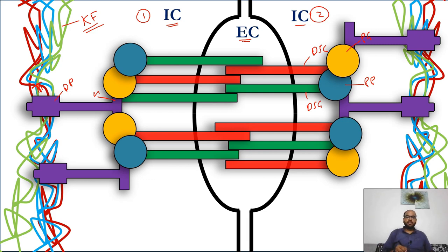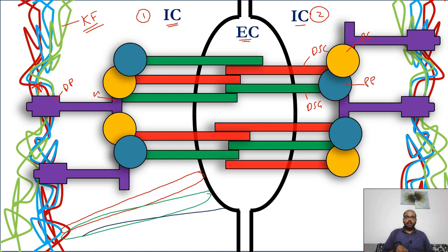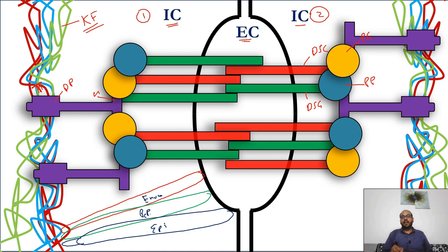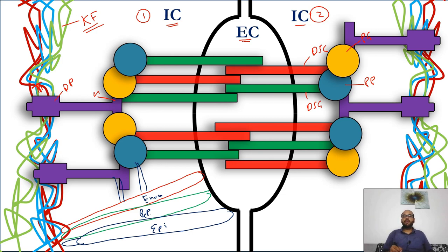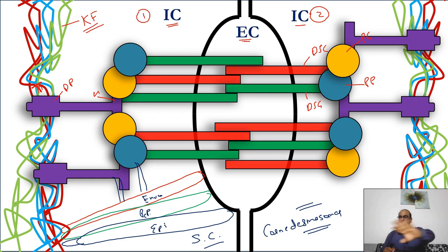Additional proteins — epiplakin, periplakin, and envoplakin — can attach directly to keratin filaments and the cell membrane, or to the plakophilin/plakoglobin or desmoplakin complex, providing further structural integrity. These three proteins have a major role in the stratum corneum during the formation of corneodesmosin.